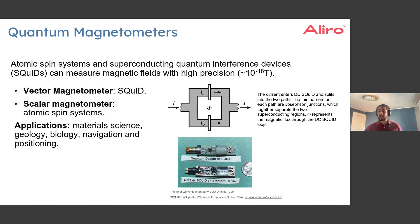As a magnetic field passes through this loop, it induces a current. That current can be measured. However, there has to be a specific amount of voltage to surpass these Josephson junctions, leading to a measurable tip in the current.